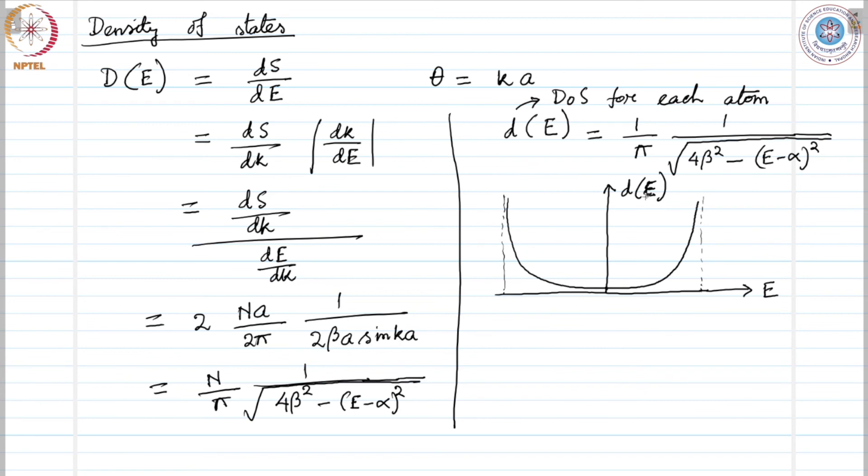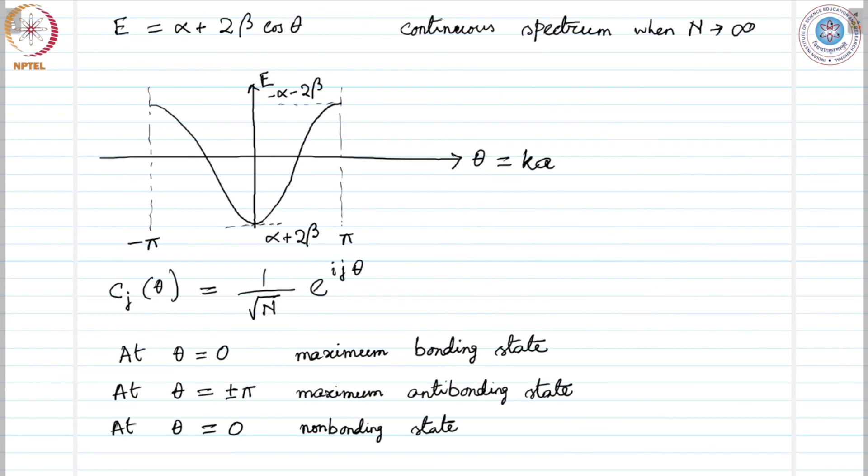α - 2β is here, α + 2β is here, and these are the places where the density of states peak. In between it is very flat; there are very few states in the region in between. That is what we obtain by performing this calculation.